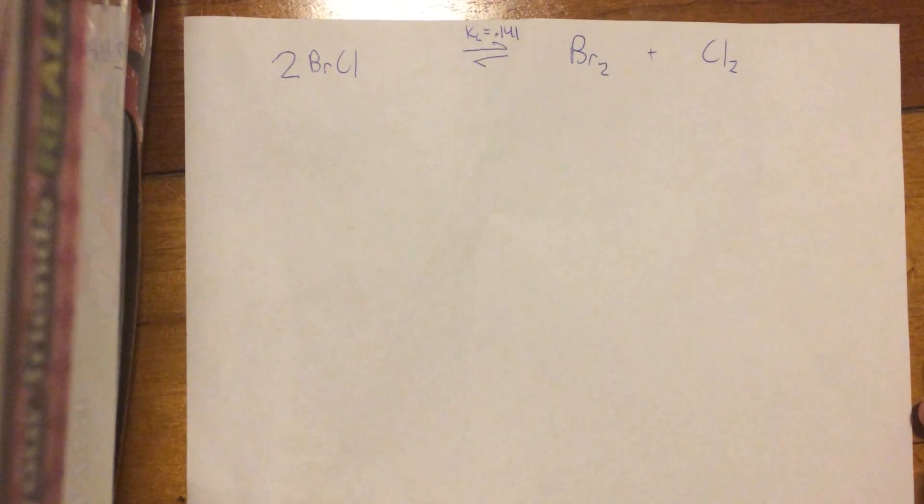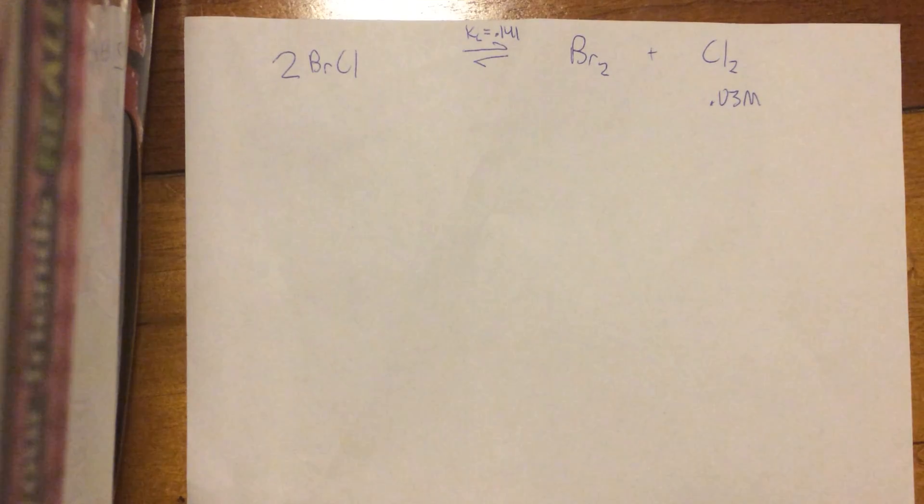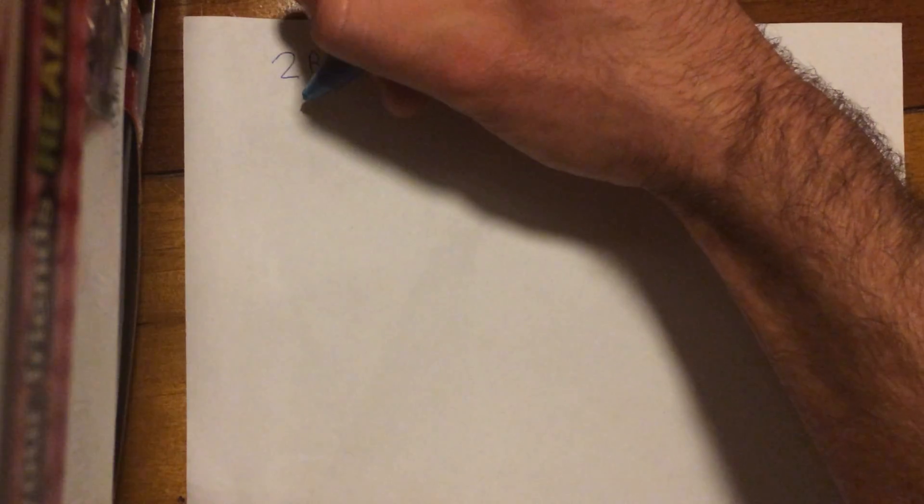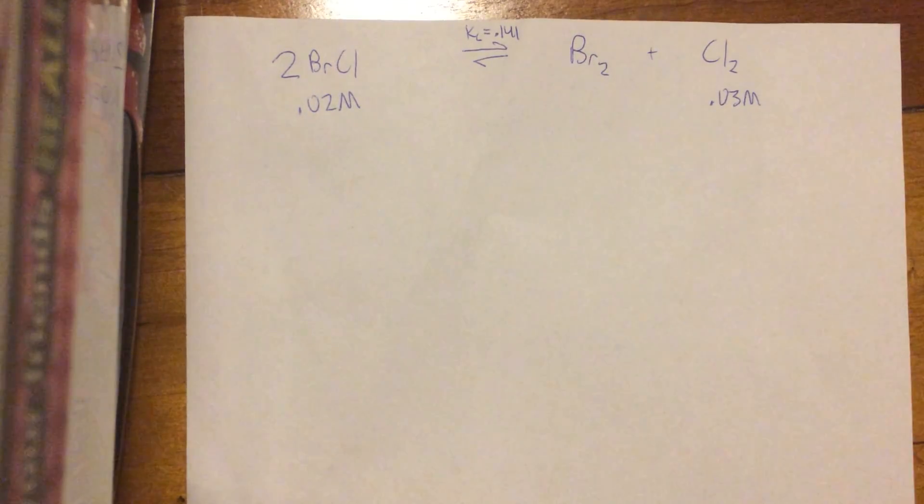And then they tell us that chlorine has a 0.03 molarity. And bromine monochloride has a 0.02 molarity. So remember molarity is moles over liters, don't confuse that.